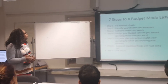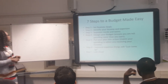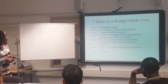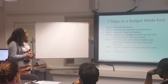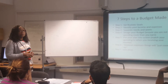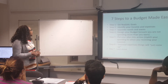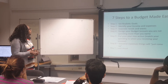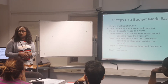There are several steps to a budget that make it easy. Step one: set realistic goals. Step two: identify your income and your expenditure. Step three: separate needs from wants. Step four: design your budget — ensure you are not spending more than you earn. Step five: put your plan into action — match your spending to when you receive your income. Step six: seasonal expenses — things will jump up. Step seven: look ahead.